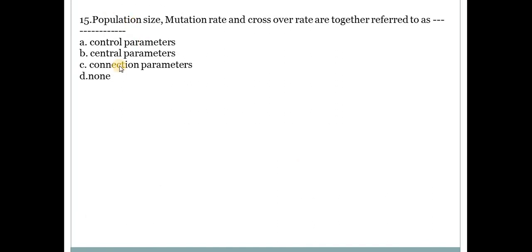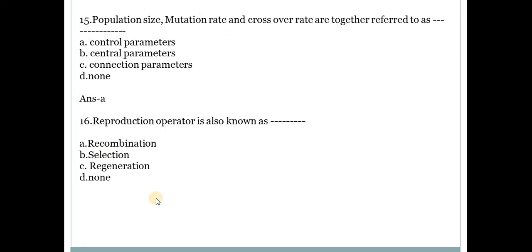Fifteenth question. Population size, mutation rate and crossover rate are together referred to as. Answer is control parameters, option A. Control parameters. The three elements population size, mutation rate and crossover rate this all are considered as parameters. Next one.